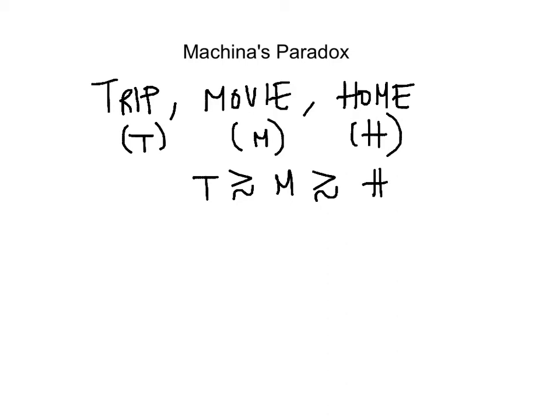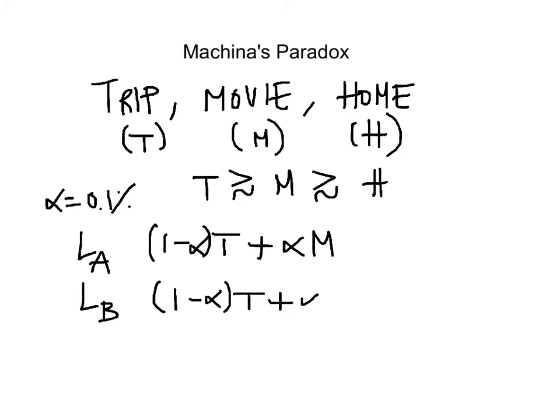Now let's consider two lotteries. You're choosing between two lotteries. The first lottery gives you a trip with a very high probability and watching the movie with a very small probability. Let's pick our probability alpha equal to 0.1%. So Lottery A gives you this trip with a very high probability plus a small probability of a movie. Lottery B gives you the trip, again, with a high probability plus a small probability of staying home.